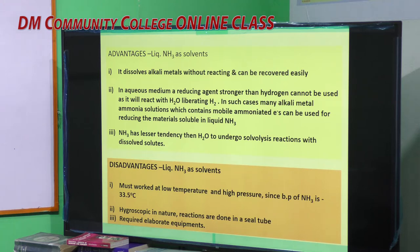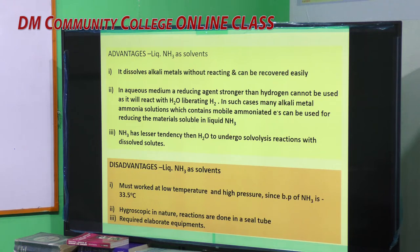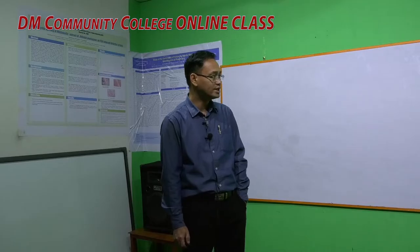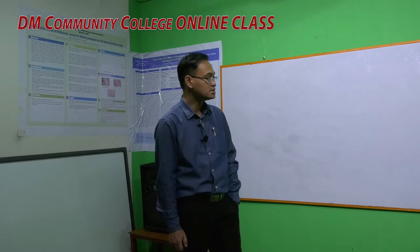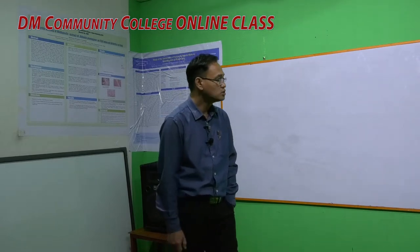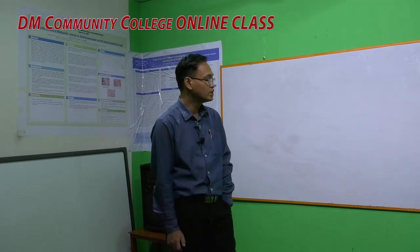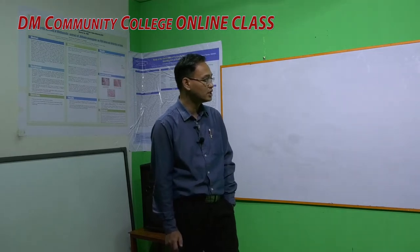Second advantage: in aqueous medium, a reducing agent stronger than hydrogen cannot be used because it will react with water, liberating hydrogen. In such cases, alkali metal-ammonia solutions, which contain mobile ammoniated electrons, can be used for reducing materials that are soluble in liquid ammonia.